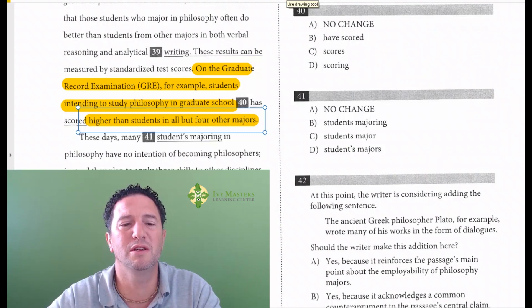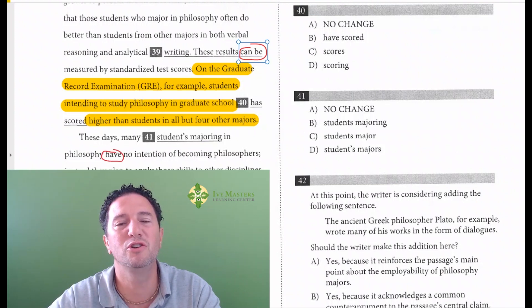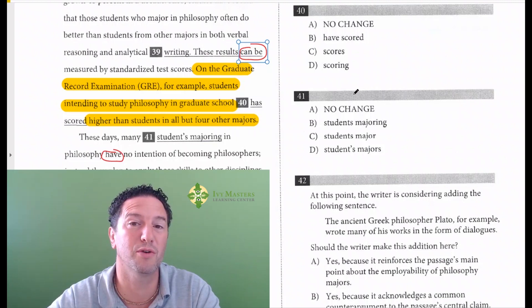So tense - typically what you're doing is you're checking the verbs before. Before can be present tense, the verbs after have present tense, and usually it's consistent with the verbs before and after. So usually we'd be looking for present tense here.